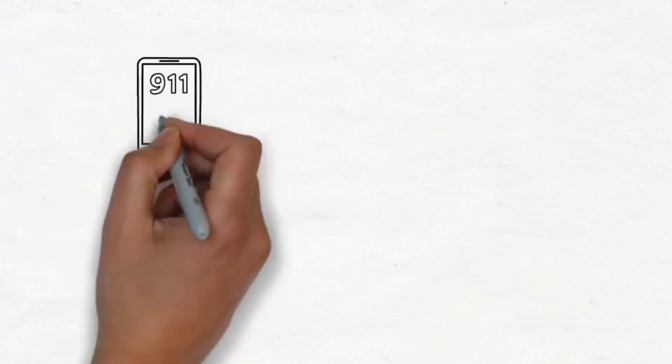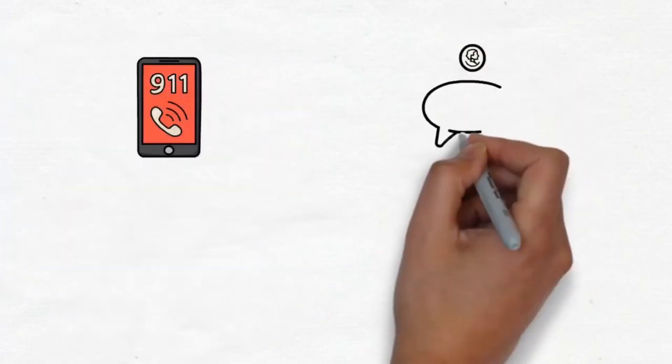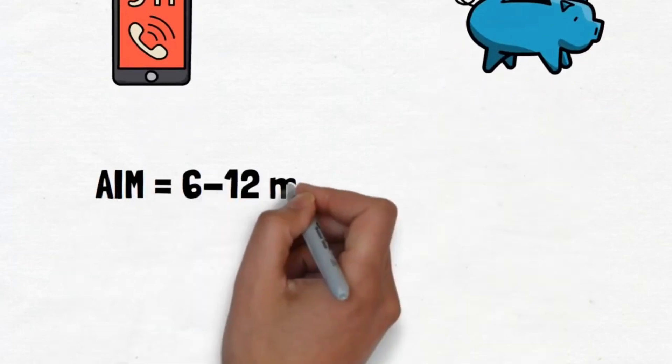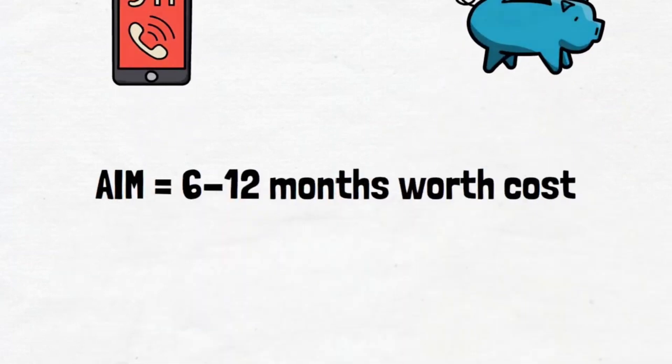You should also keep a modest, separate emergency fund to meet unexpected expenses. Aim to save 6-12 months worth of costs in your emergency fund, then replace it when you spend it.